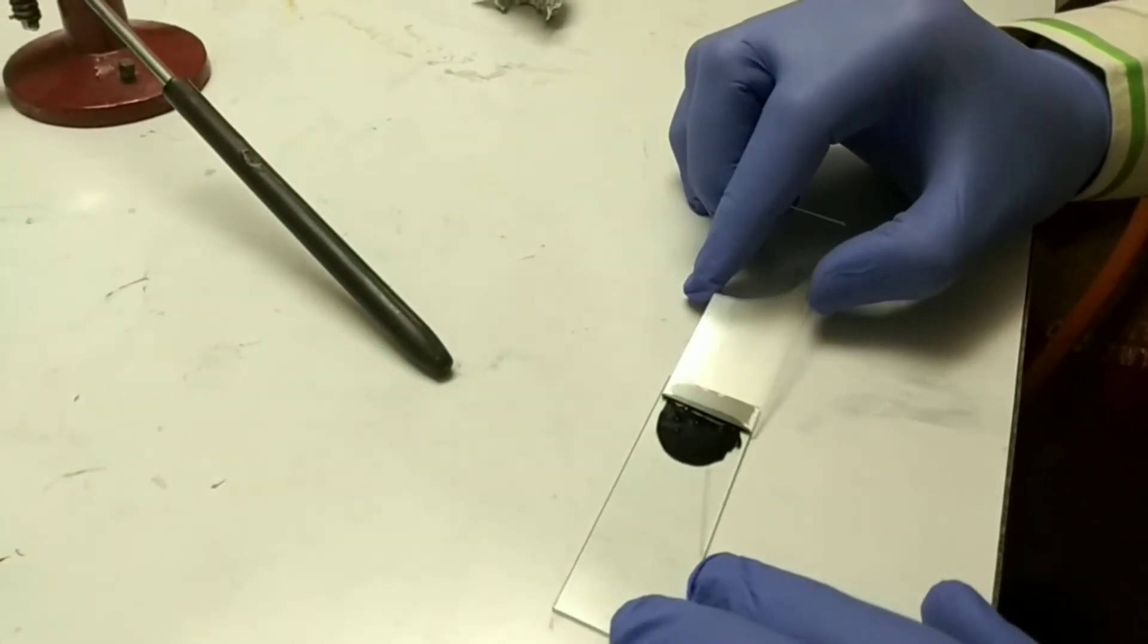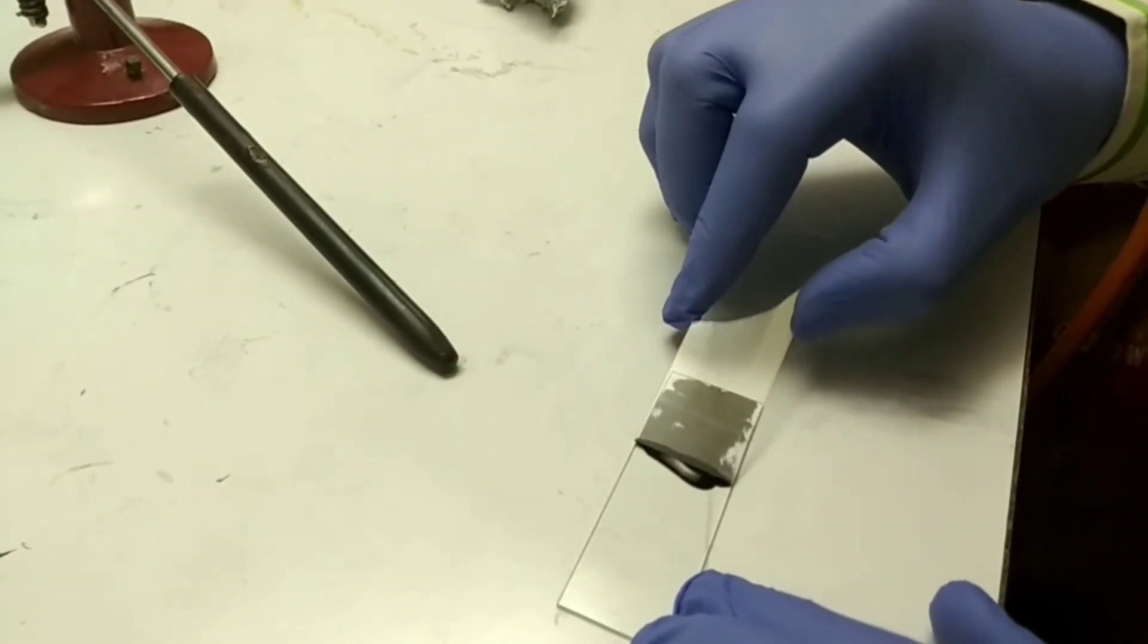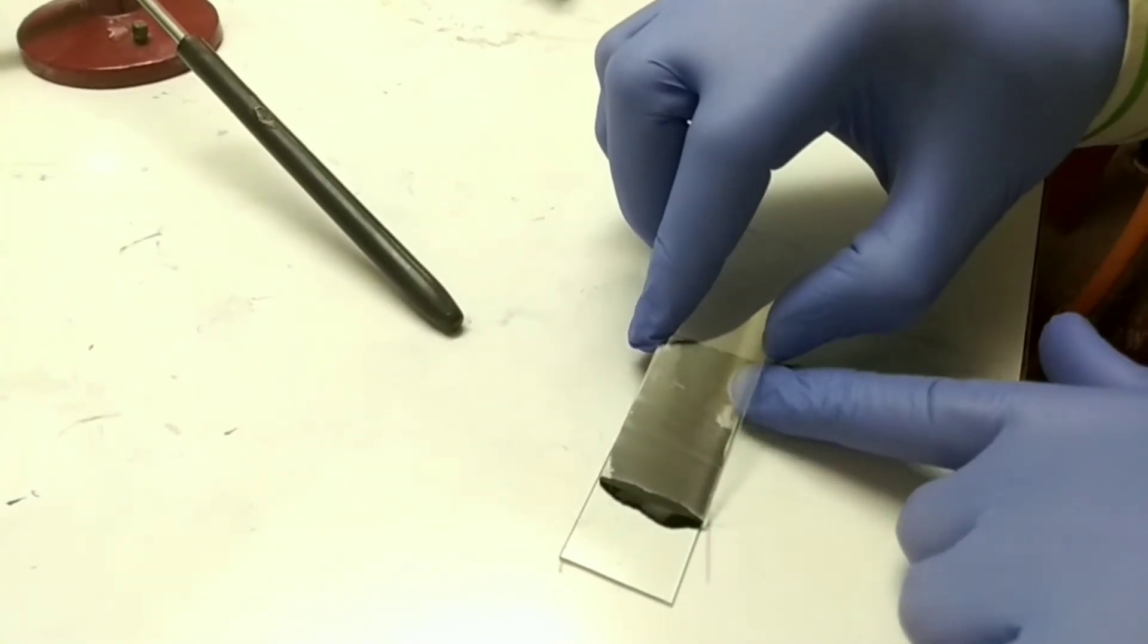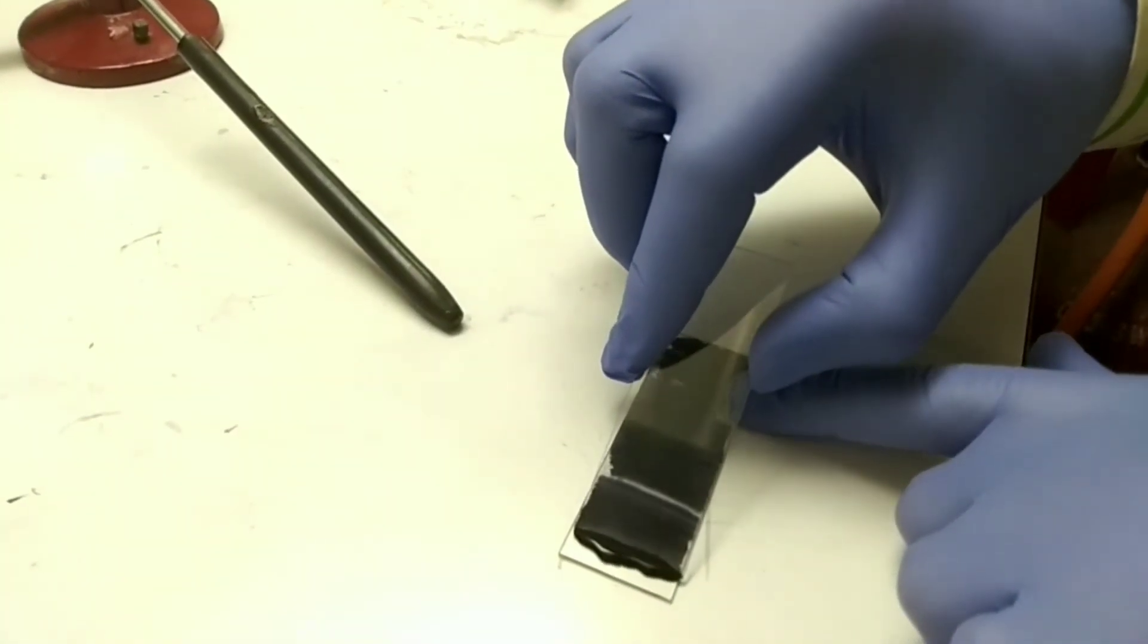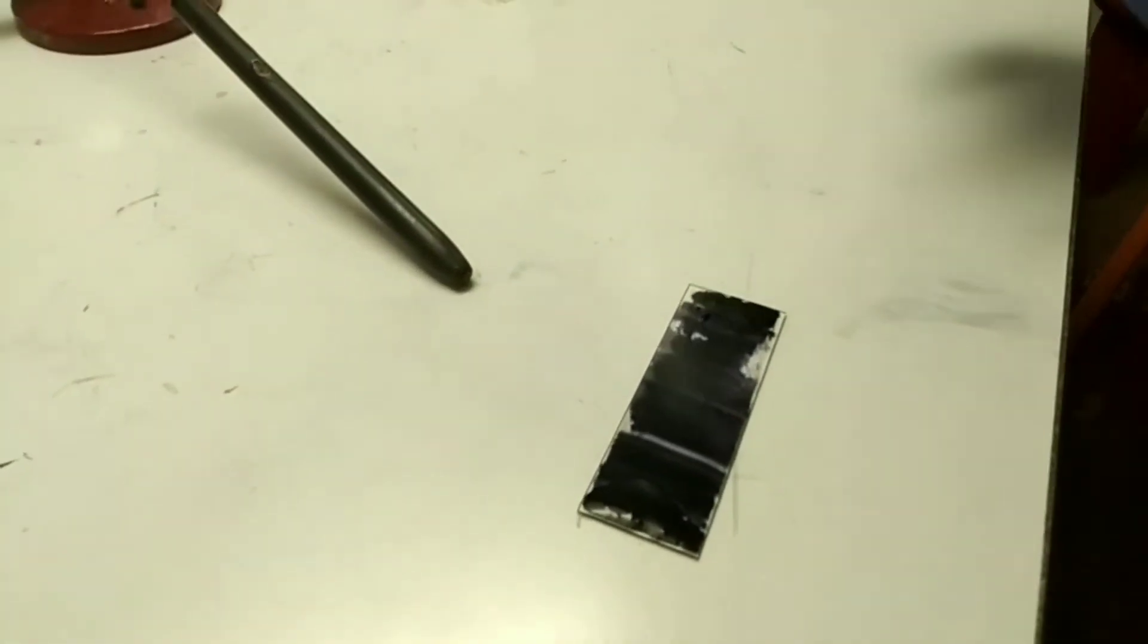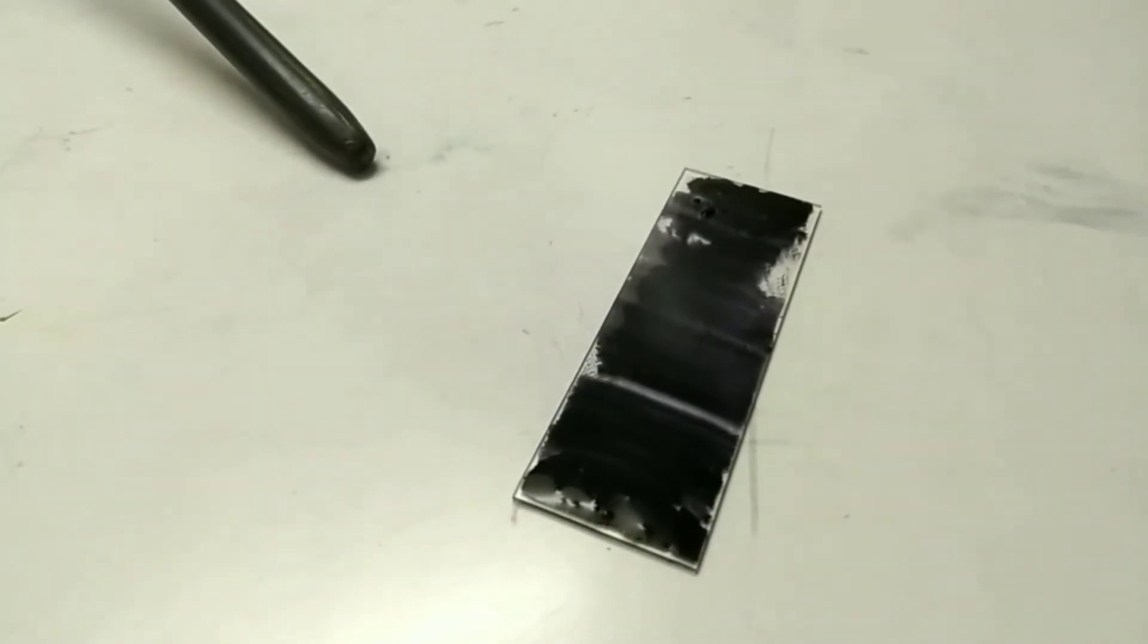After properly mixing, we have to make a film from this nigrosin and culture mixture. Keep in mind that you have to make a thin film so that you can observe the microorganisms and their capsule in a proper way under microscope. After that, air dry the slide. Don't heat fix the slide because heat fixing will melt the capsule and you won't be able to visualize the capsule properly.